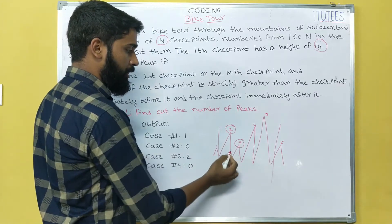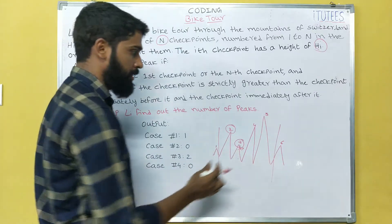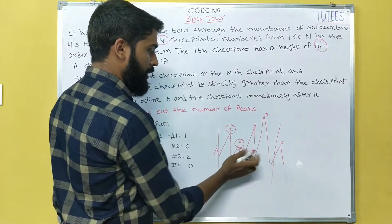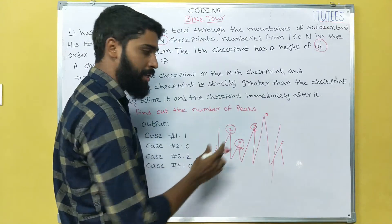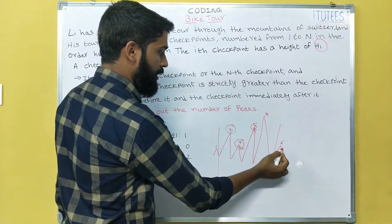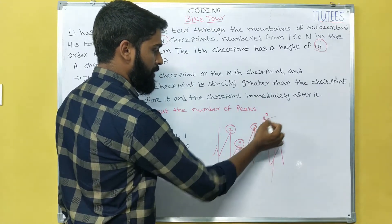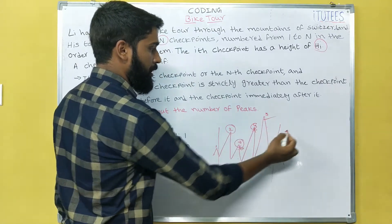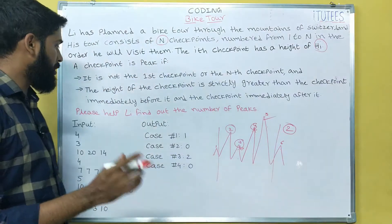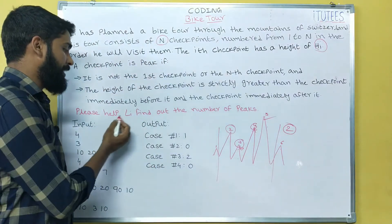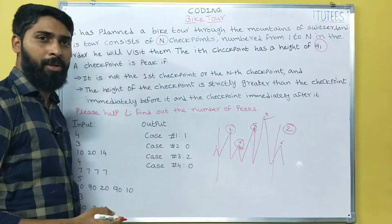Coming to checkpoint 3 — this is less than the next, so it is not a peak. Coming to checkpoint 4 — this is also not a peak because checkpoint 5 is greater than 4. For checkpoint 5: values are 4, 5, 6 — so 5 is not greater than 6. So how many peaks? There are two peaks. Please help Lee find out the number of peaks.